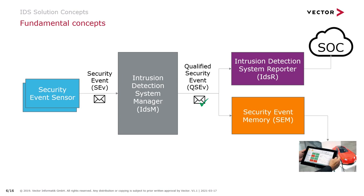Qualified security events can be further processed either by pushing them to a dedicated diagnostic event memory called the security event memory, or by pushing the qualified security events via the bus system to another ECU which hosts an Intrusion Detection System Reporter. This IDS Reporter is connected via a channel to the Security Operations Center, where the security events are further analyzed.